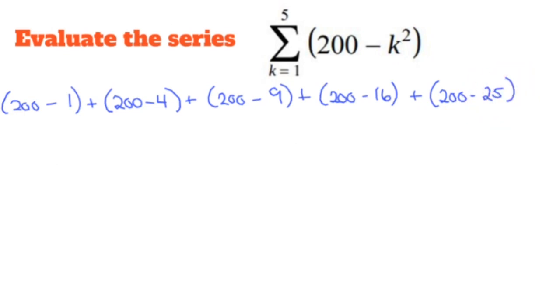All right, let's simplify all these guys. We got 199, which is 100 more problems than Jay-Z had. We have 196, we have 191, we have 184, and we have 175.